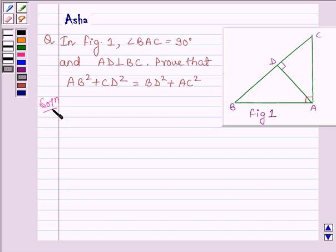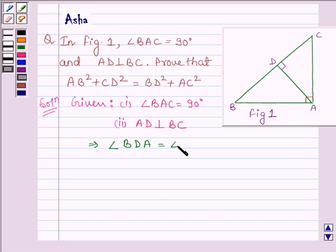Well, let's start with the solution. Here we are given first that angle BAC is equal to 90 degrees and also we are given that AD is perpendicular on BC. So, this implies that angle BDA is equal to angle CDA is equal to 90 degrees.